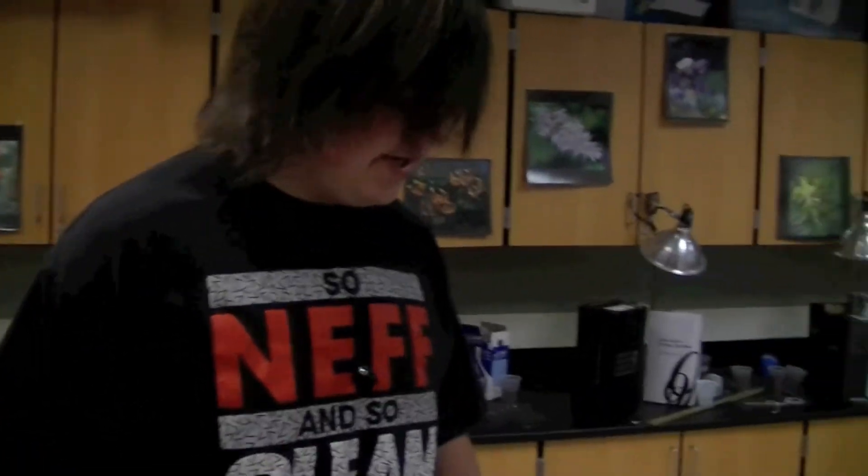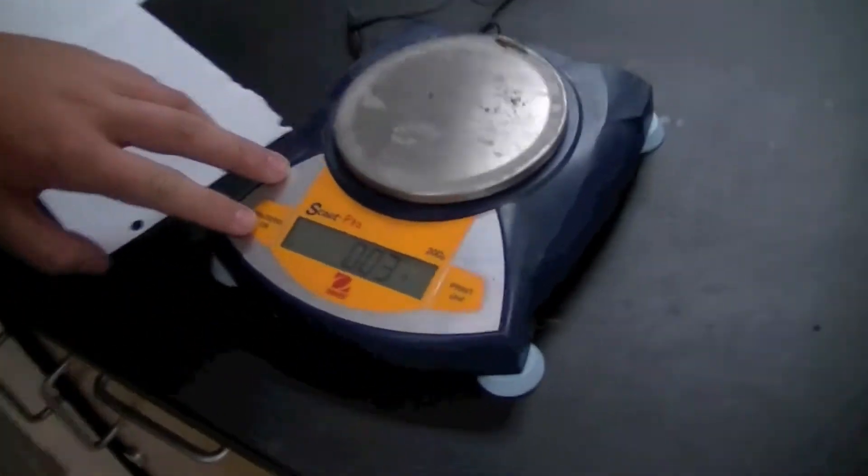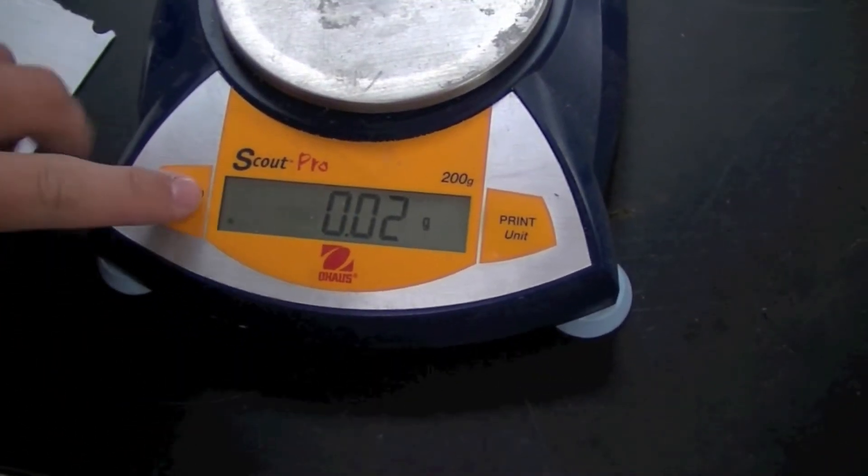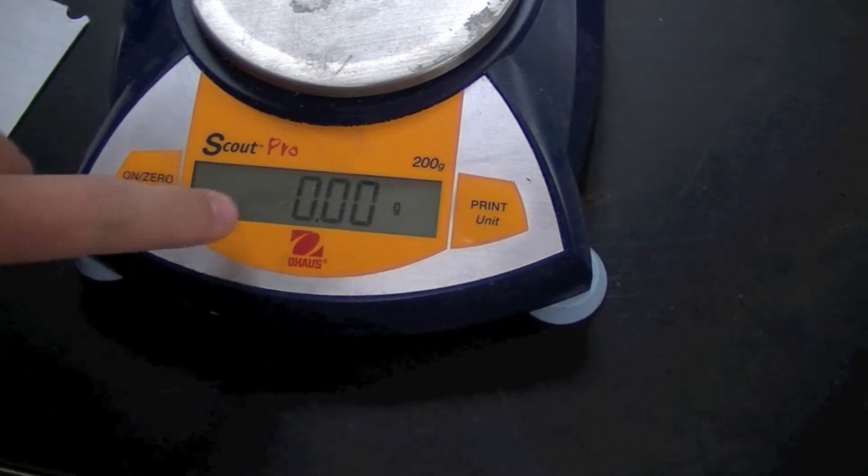The next step, you're going to need to make sure your scale is set on zero. As you can see, there's nothing on here, but it's set at 0.02 grams. If you hit the zero button, it rebalances.